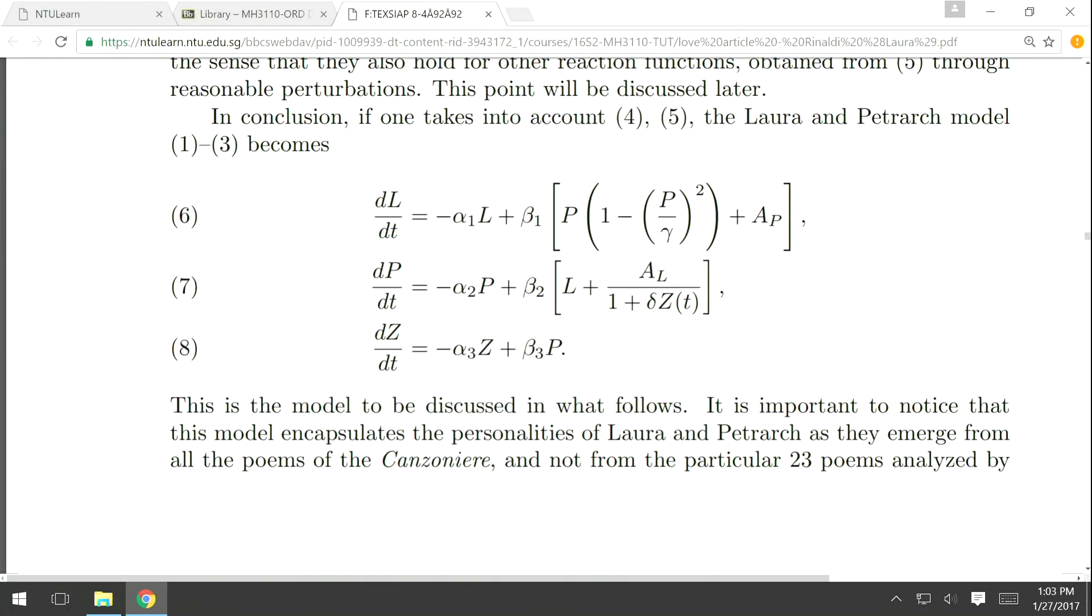The left hand side of the system are the three derivatives of the variables, and the right hand side is some expressions in the variables L, P, and Z. Besides, there are some alpha one, beta one, and so on, gamma—these are parameters.